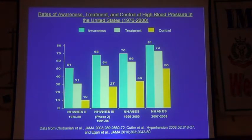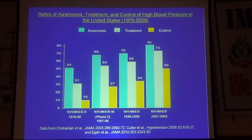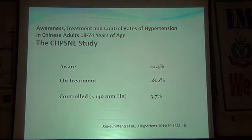Even in the US, awareness of hypertension increased year by year — from 51 percent in 1976-80 to 81 percent around 2000. But what is unfortunate is how many are actually getting controlled — only 50 percent of people on treatment had BP under control. In a Chinese study, awareness was 42 percent but control was only 3.7 percent. This highlights that the importance is not just diagnosis or starting treatment, but controlling BP to the optimum level.